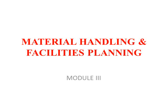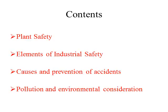Module 3 is a very small module which only has 4 elements. Starting with plant safety — most elements of industrial safety are almost the same, so plant safety also means industrial safety. Then we cover what is industrial safety and what are the elements of industrial safety, then causes of accidents, how we can prevent accidents, and finally pollution and what are the major causes of pollution. These are the 4 parts in this module.